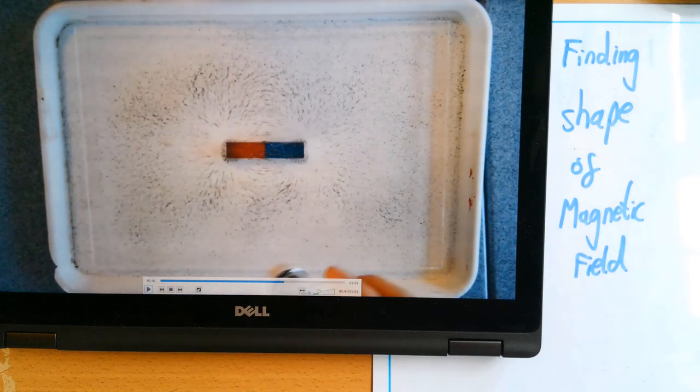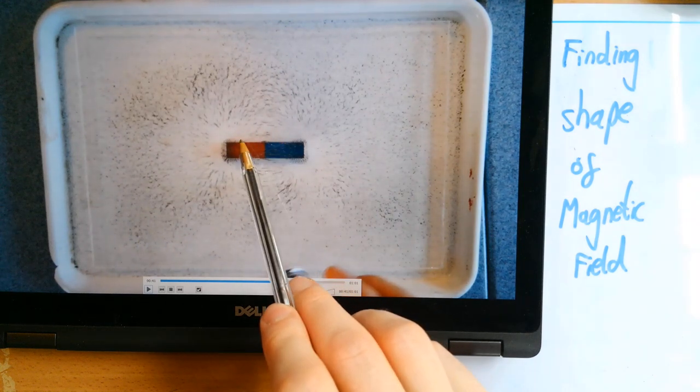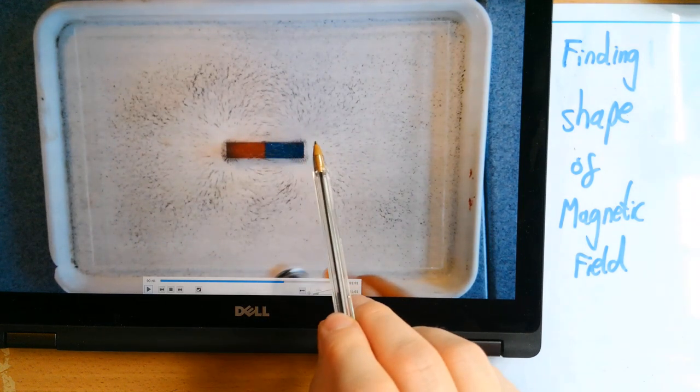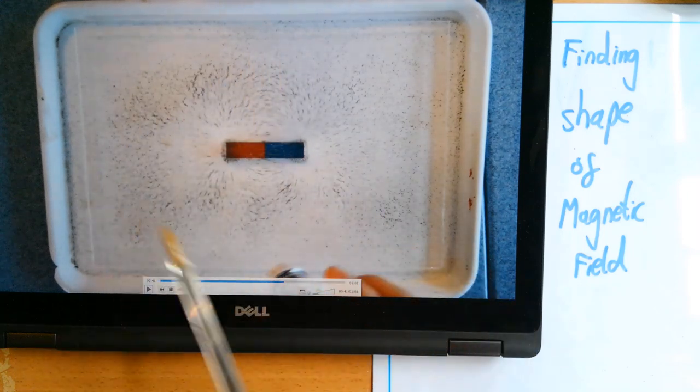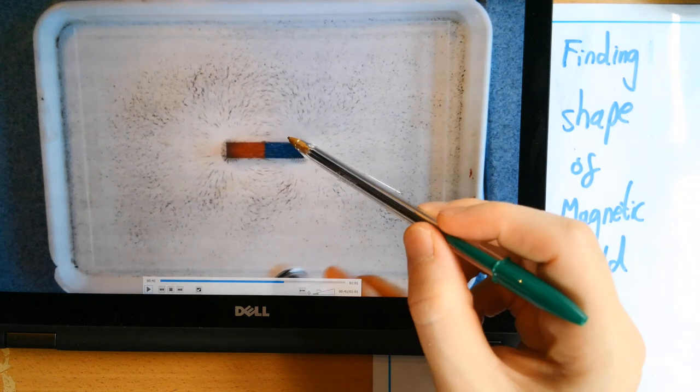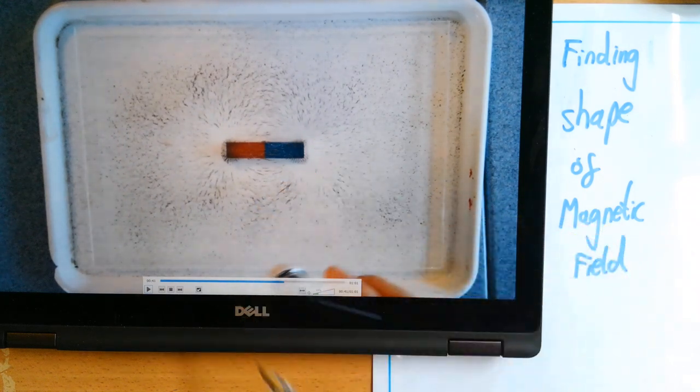Now there's a few interesting things happening. You can start to see these kind of circular shapes starting to form, as well as out here coming out that way and going that way. You can also see in this bit kind of almost a halo around where there's no iron filings.